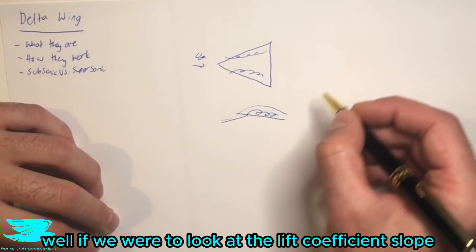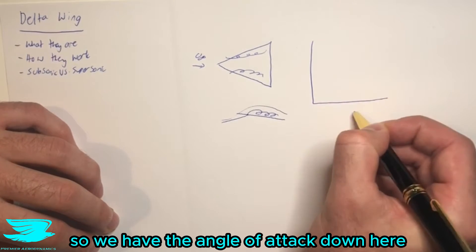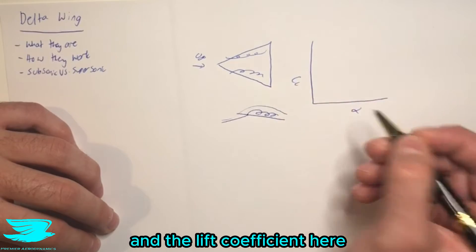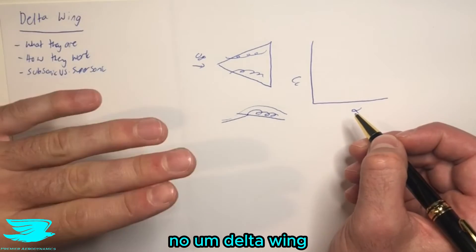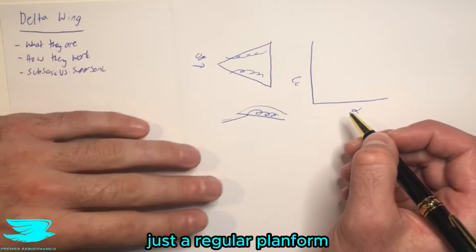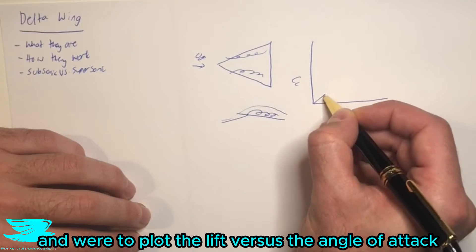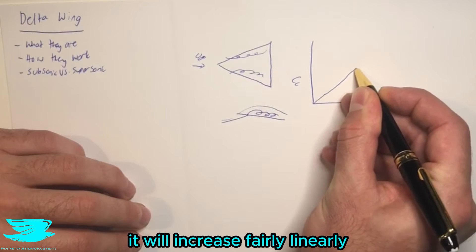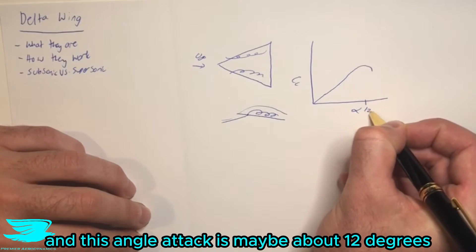And why is that good? Well, if we were to look at the lift coefficient slope, so we have the angle of attack down here and the lift coefficient here, and we were to plot a regular airfoil, let's say a NACA 0020, and it's just a typical airfoil, no delta wing, just a regular platform, and we were to plot the lift versus the angle of attack, it will increase fairly linearly and then it will drop off. And this angle of attack is maybe about 12 degrees.